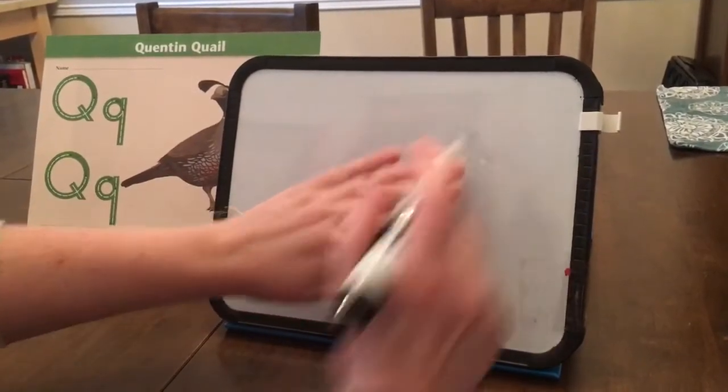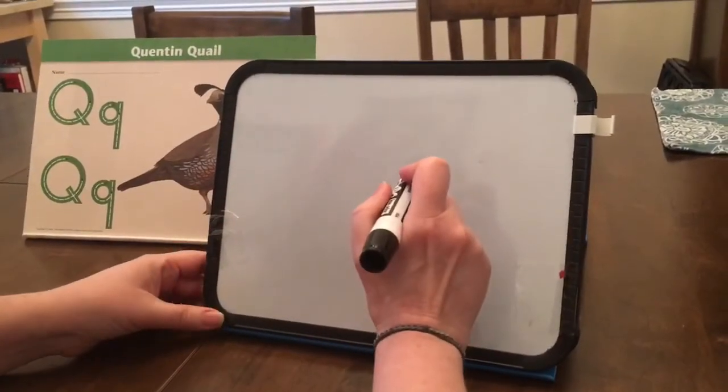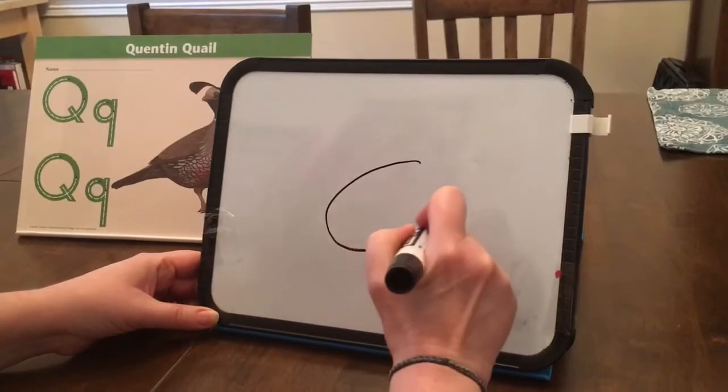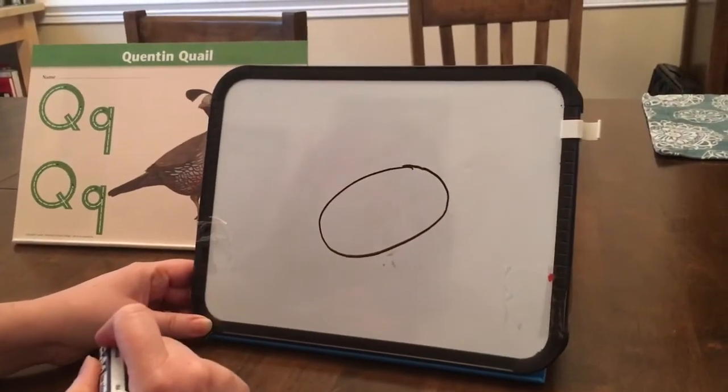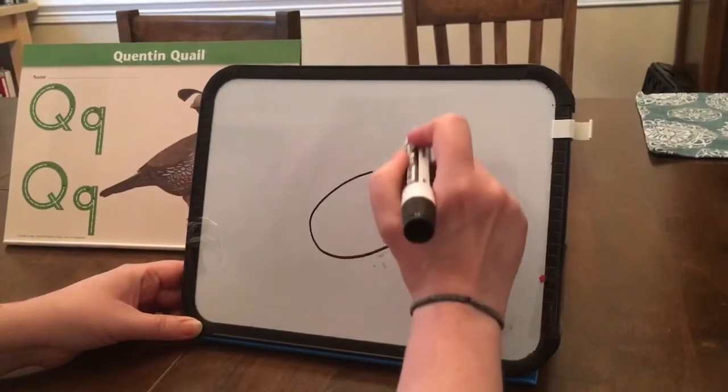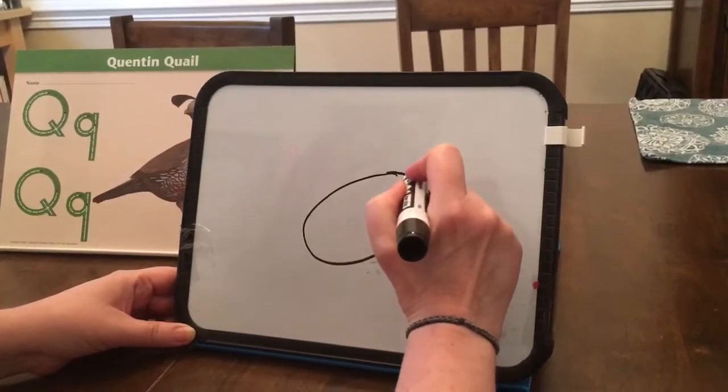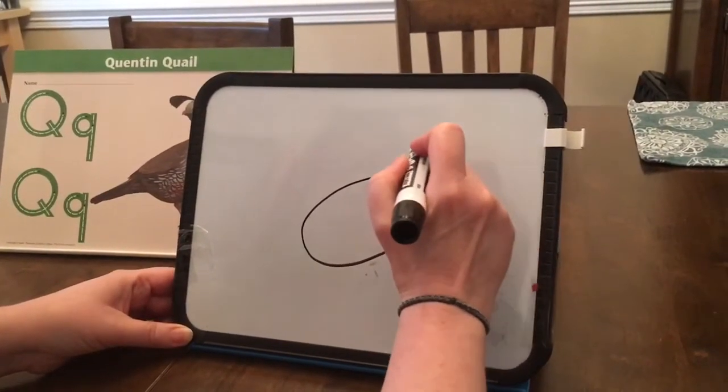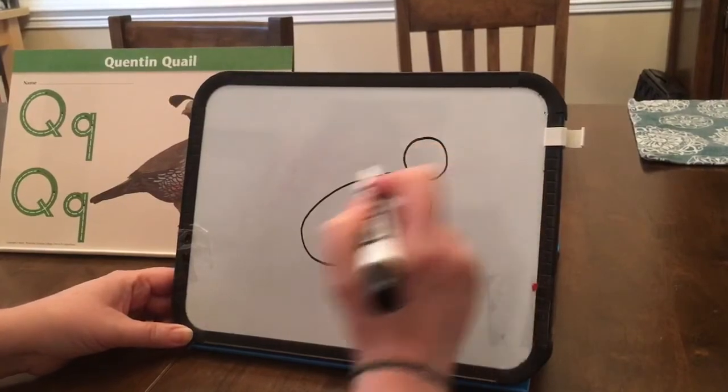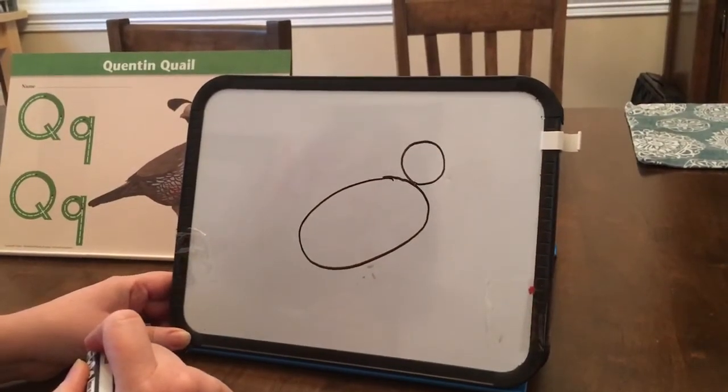Okay, that means it's going corner to corner. So we're going to draw an oval like this and that is going to be Quentin Quayle's body. Now we're going to draw a circle. What do you think that's going to be? That's right, Quentin Quayle's head.